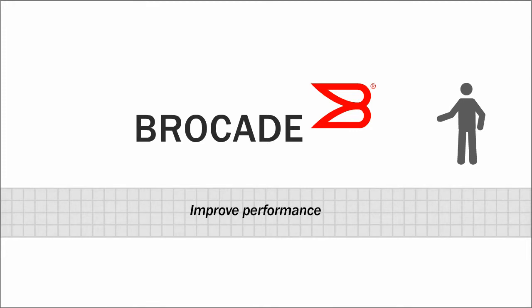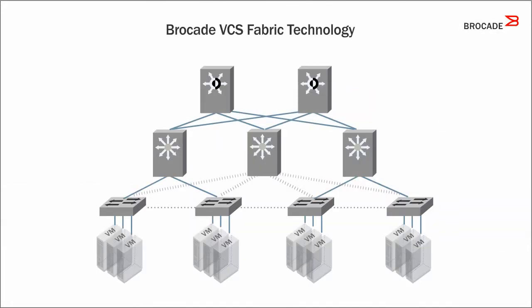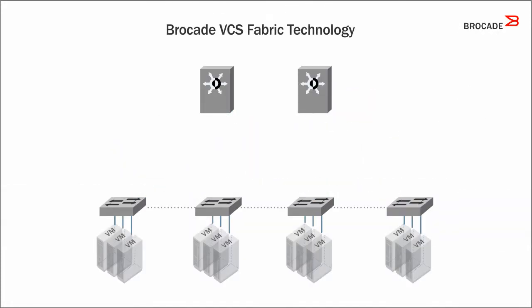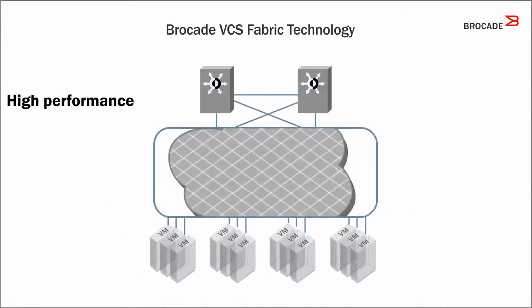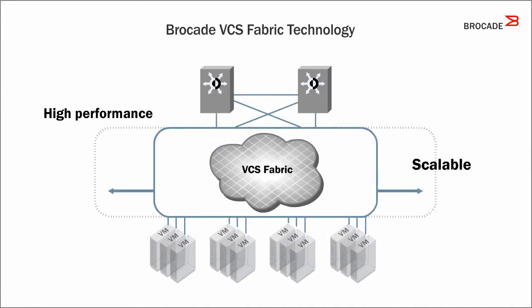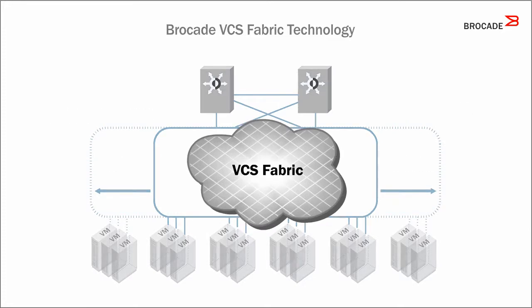Brocade VCS Fabric technology simplifies network architectures to streamline deployment and improve the performance of virtualized resources. It provides a strong foundation for cloud-optimized networking.